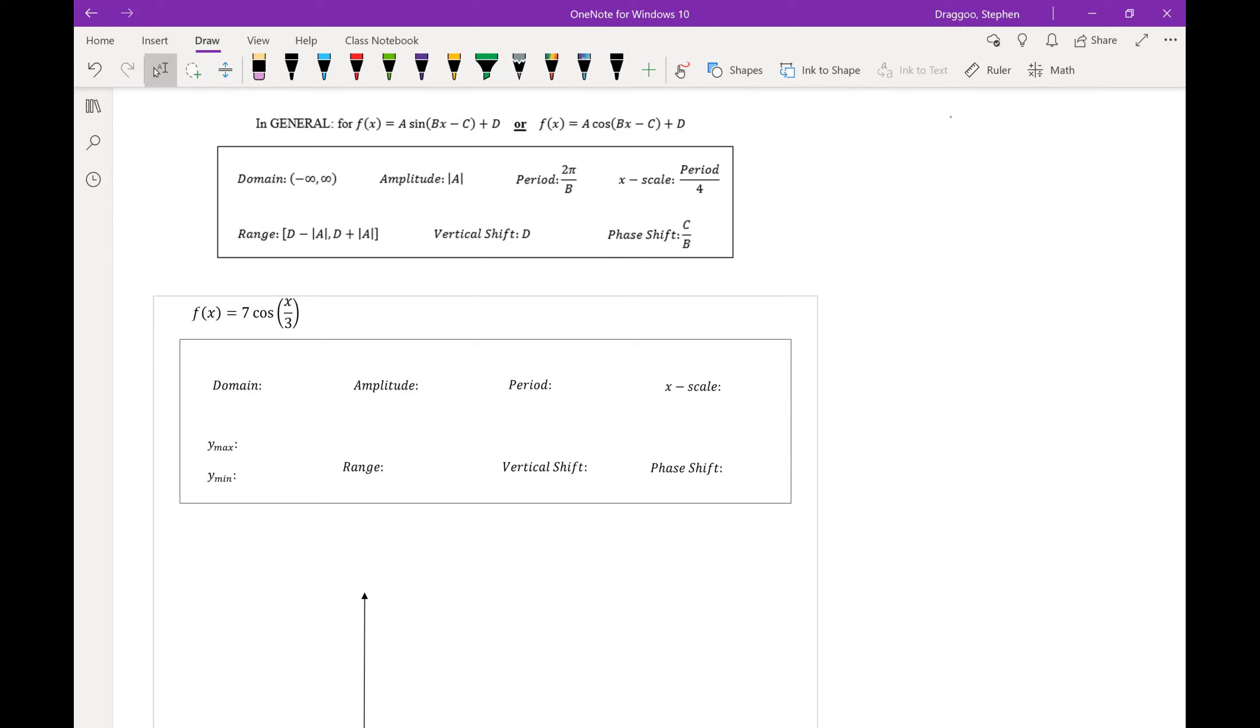Alright, now we're graphing seven cosine of x over three. Again that domain, all real numbers, nothing's going to change that. For that amplitude, I want the absolute value of a, so the absolute value of seven, which is still seven.